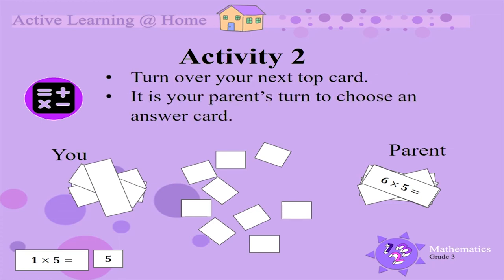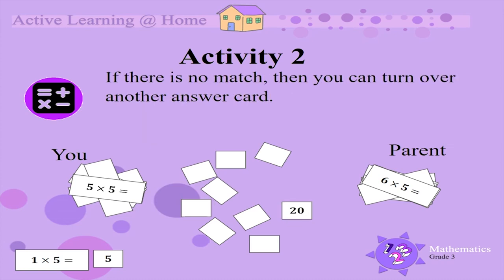Whoever says SNAP keeps their pair of cards. You must now turn over your next top card. It is your parent's turn to now choose an answer card. 20. If there is no match, then you can turn over another answer card. 30. Your parent has the multiplication card 6 x 5, which is equal to 30. SNAP!